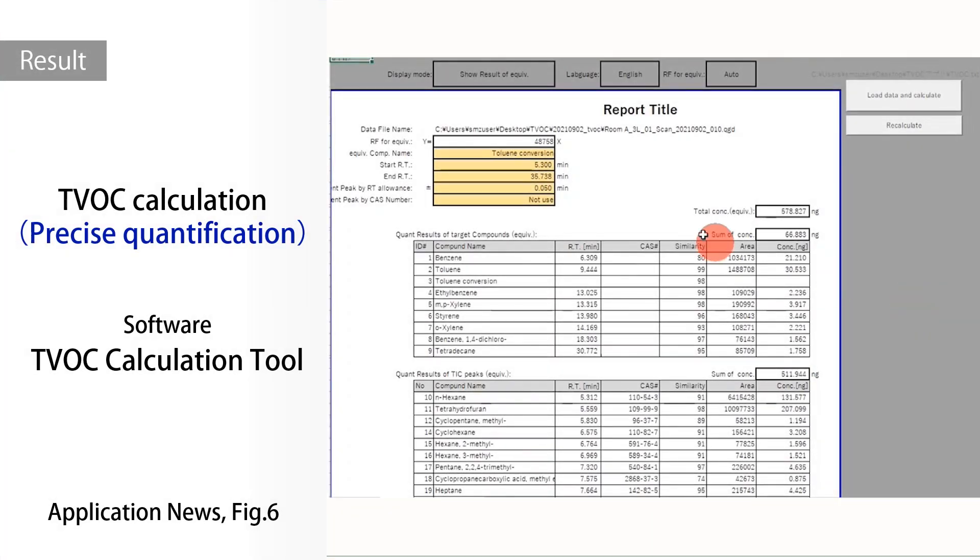The tool also has a function that switches the results from the toluene-equivalent to precise quantification. Precise quantification can be performed for those compounds that have been run with corresponding calibration curves. For those without corresponding calibration curves, toluene-equivalent values will be assigned, making the database versatile to any applications you might be interested in.